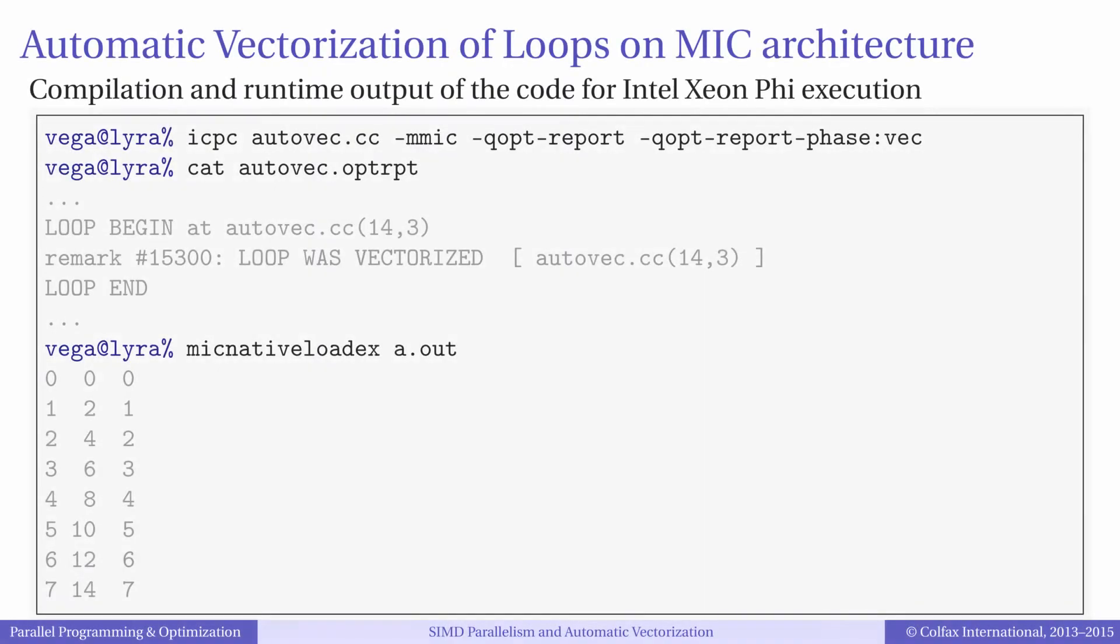If we want to port our example application to the MIC architecture, all we need to do is to recompile the code with the argument dash MMIC. In this case, the optimization report also tells us that the loop was automatically vectorized, and we can run the code on an Intel Xeon Phi Coprocessor to see that the result is correct.